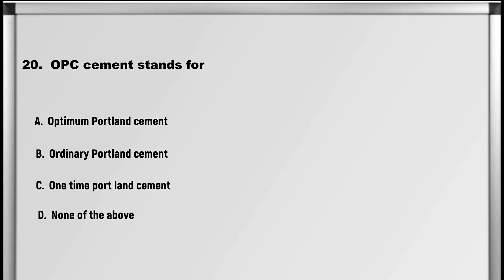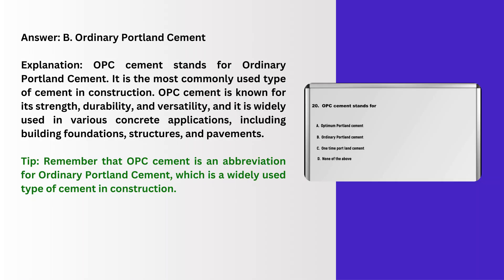Moving on to question number 20: OPC cement stands for: A. Optimum Portland Cement, B. Ordinary Portland Cement, C. One Time Portland Cement, D. None of the above. Answer: B. Ordinary Portland Cement.